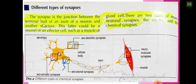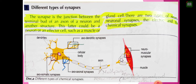There are different types of synapse between one neuron and another. The synapse is a junction between the terminal bud of an axon of a neuron and another structure. You know our neuron has a cell body, axon, and terminal arborization. The terminal bud or terminal arborization is an extension at the end of the axon. The synapse is a gap junction.